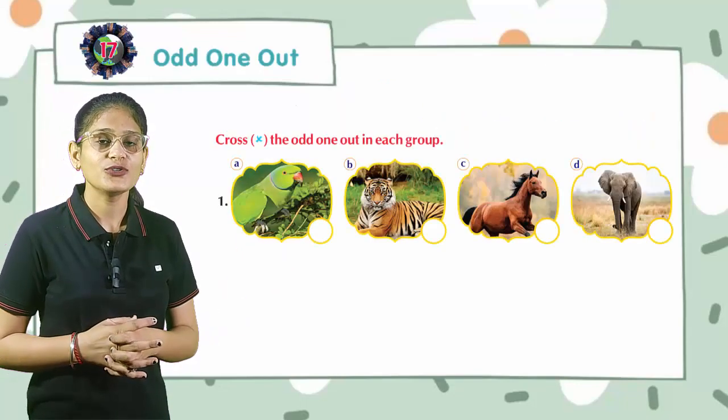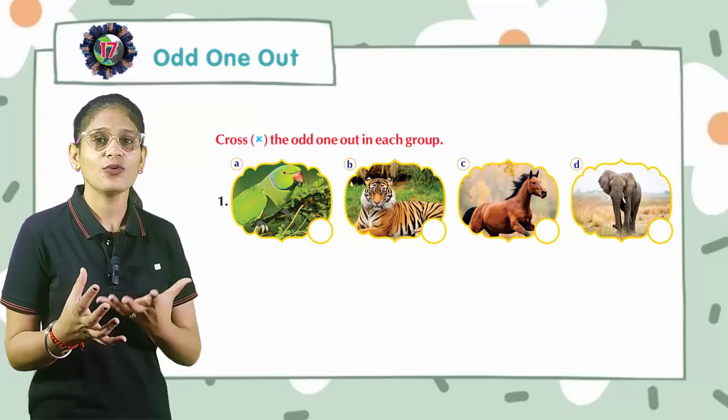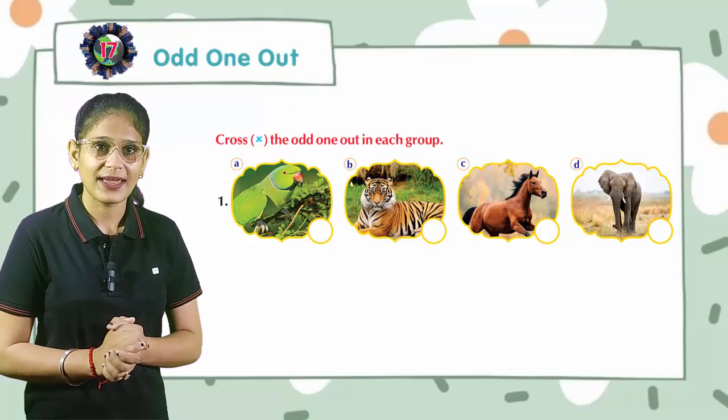Cross the odd one out in each group. So students, you have to check in the groups who is odd, who is different, and cross it out.